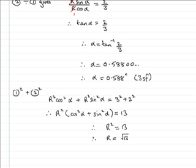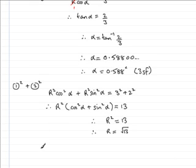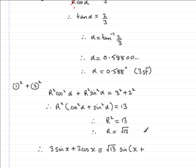So we've now got r and alpha. So therefore, I can wind this problem up by saying that 3 sine x plus 2 cos x, remember we were told that it was identical to r sine x plus alpha, well I now know r is root 13, and then I have the sine of x plus alpha. Alpha was 0.588 to 3 significant figures, so I'll just pop that in there, 0.588 in radians. And there we have it. That's the end of part A.